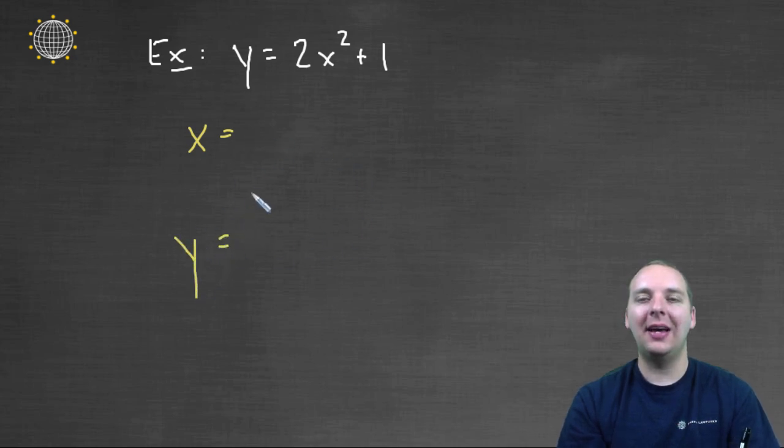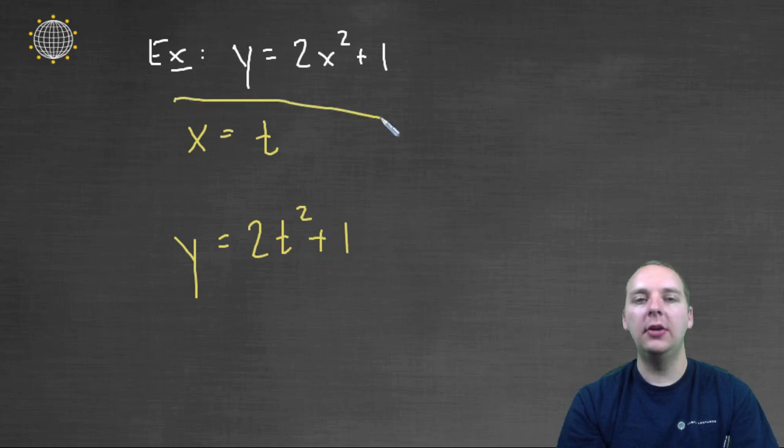And I want this guy to be a parametrization of this equation here. And my tip earlier was just always let the x just be t. And now we see why this works. It's because if y equals 2x squared plus 1, but x is t, then you suddenly have y equals 2t squared plus 1 and you're done.